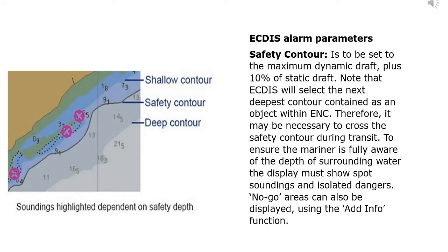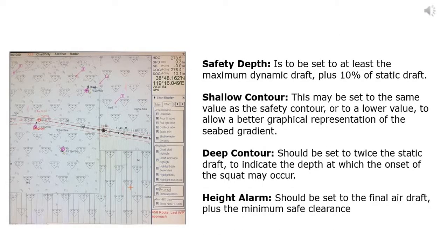The alarm parameters: the safety contour is to be set to the maximum dynamic draft plus 10% of static draft. Note that this will select the next deepest contour contained as an object within ENC. Therefore it may be necessary to cross the safety contour during transit to ensure the mariner is fully aware of the depth of surrounding water. The display must show spot soundings and isolated dangers; no-go areas can also be displayed using the add info function.